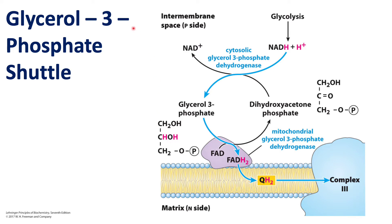In this case we have the glycerol-3-phosphate shuttle. In this mechanism, the electrons of NADH are added onto dihydroxyacetone phosphate. Dihydroxyacetone phosphate is one of the intermediates of glycolysis — when fructose-1,6-bisphosphate is split in half, we get glyceraldehyde-3-phosphate and dihydroxyacetone. In glycolysis, this dihydroxyacetone isn't useful, so we convert it into glyceraldehyde-3-phosphate.